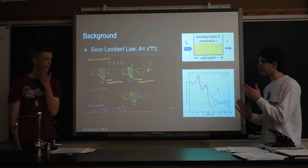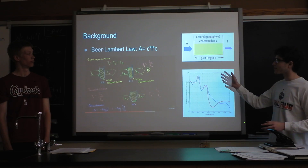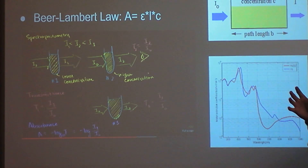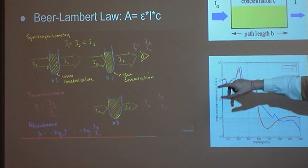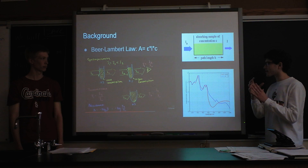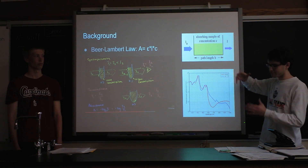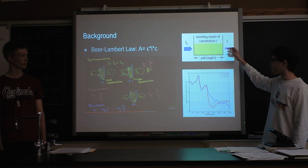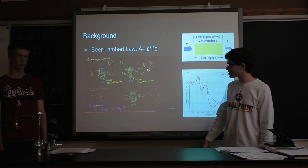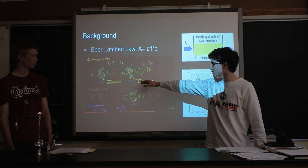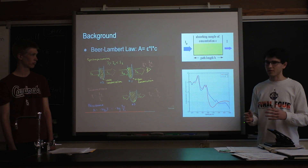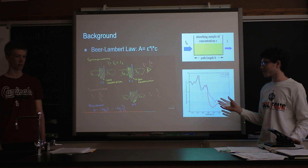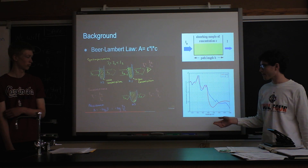For background, there is one principle that this experiment uses: the Beer-Lambert law, which states that absorbance equals the molar absorptivity coefficient times the path length times the concentration. Explained through diagrams, when you pass light through a substance in some kind of holding device, the initial intensity and final intensity of that light are proportional to the absorptivity of the substance. A substance that is more concentrated will absorb more light, and light passing through a wider space will also have higher absorptivity.